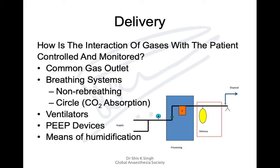Delivery is about how the interaction of gases with the patient occurs and how these are controlled and monitored. There is a common gas outlet to which breathing systems are attached — these can be non-rebreathing or rebreathing circle systems. Ventilators drive the gases for the patient instead of manually squeezing the bag. Additional PEEP devices can be attached, and there can be means of humidification, though a circle system makes this less necessary.